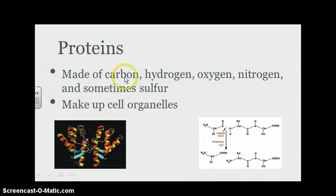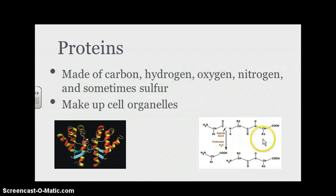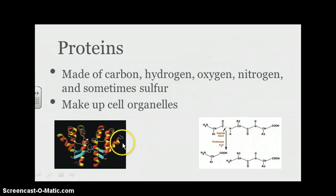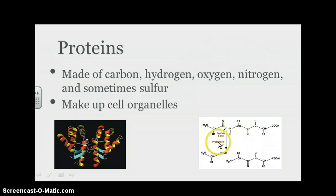Proteins are made of carbon, hydrogen, oxygen, nitrogen, and sometimes they include sulfur. Proteins make up cell organelles. I've given you an example of what a protein might look like. Here we have some alpha helices and beta sheets - we'll talk about those a little bit in class. Notice that we have our hydrogen, oxygens, nitrogens, and carbons. There isn't any sulfur in this example.